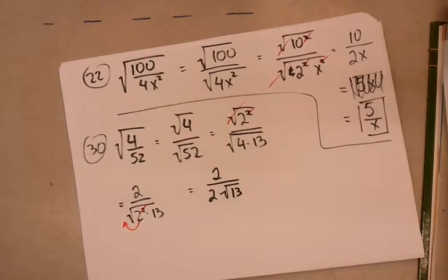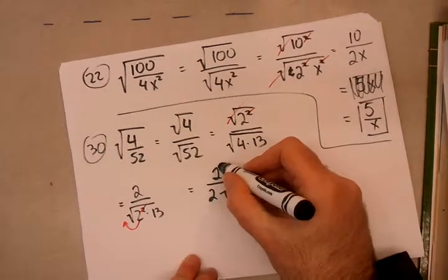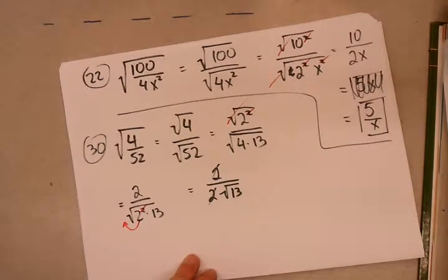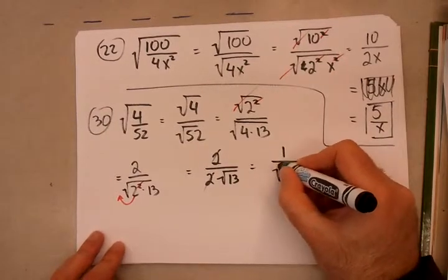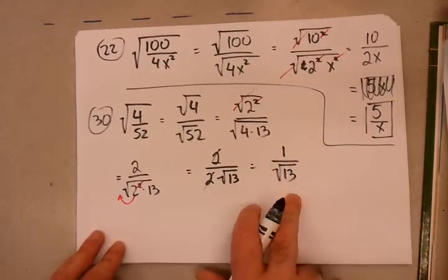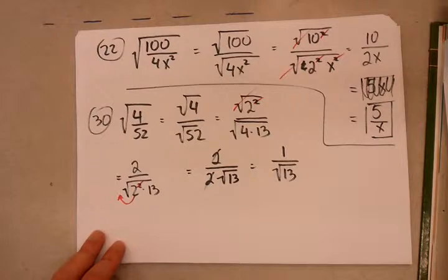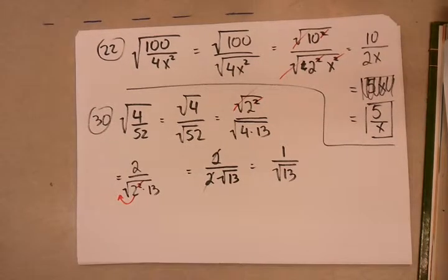Sorry, 2 over 2 root 13. Now, you're not finished here, unfortunately, because you have a square root in the denominator. And if you remember, we can't have that. First things first, let's simplify these, the 2 in the numerator and the 2 in the denominator. They simplify to 1, so you're left with 1 over root 13. Now, you've got to get rid of that root in the denominator. And I showed you how to do that.